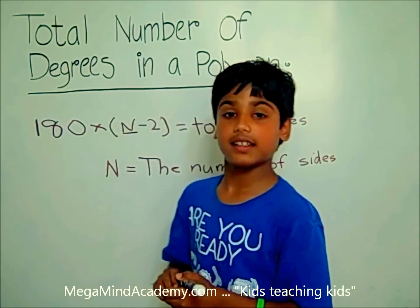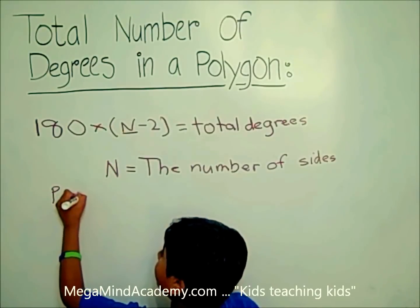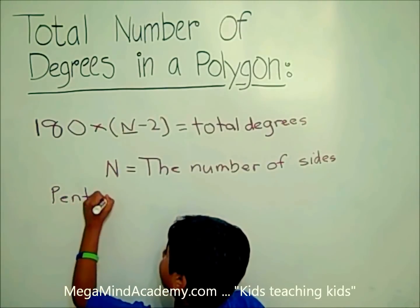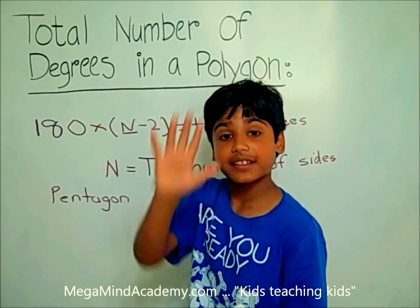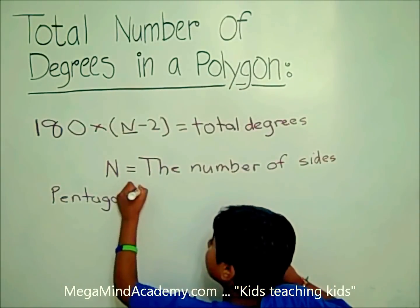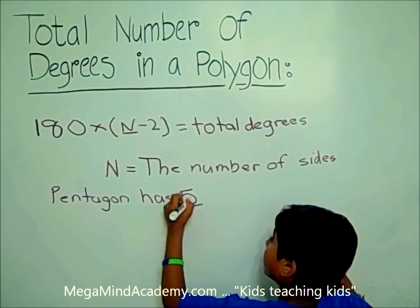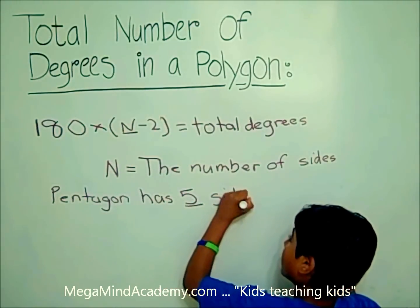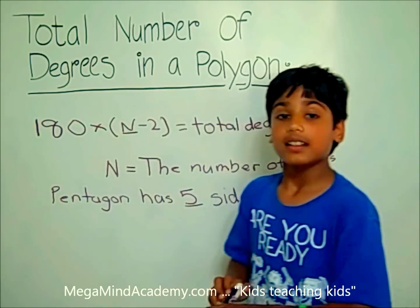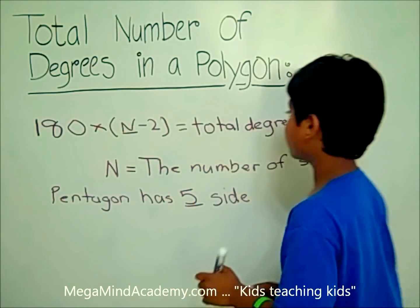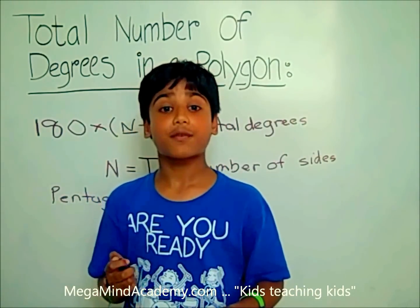So let's say the polygon is a pentagon. The pentagon has five sides. How do we find the total number of degrees in a pentagon? Here's the formula — let's use it.